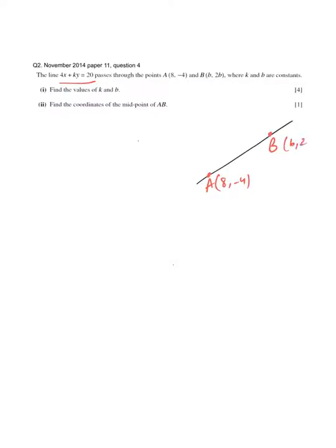So B coordinate is (b, 2b). Now, in the first part they have asked you to find the value of k and b.